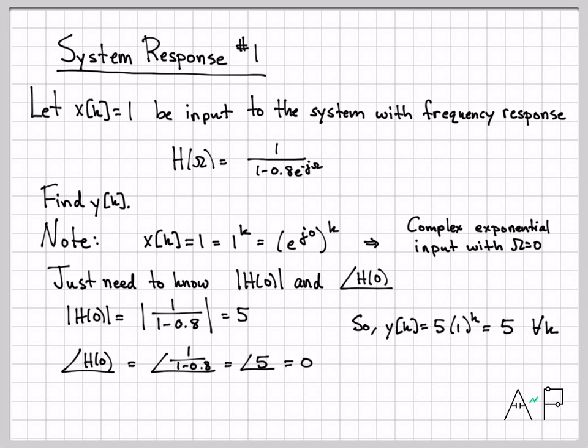And this component has been shifted in phase by nothing. So I don't need to adjust the phase at all. So my output ends up being the number five for all time. Another way of thinking about this is this system has a DC gain of five. So a DC input of one gets boosted to a value of five at the output.